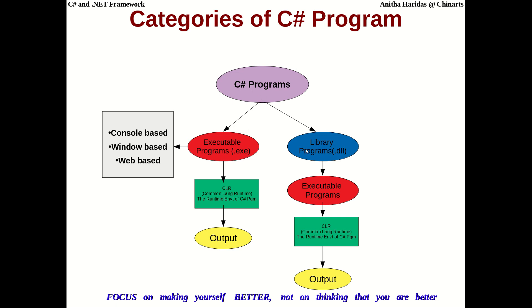There are two different categories of C# programs. First, you can create executable programs, or you can create library programs. Executable programs have an extension .exe, and library programs have an extension .dll. Executable programs can be of three types: console-based application programs, window-based application programs, or web-based application programs.